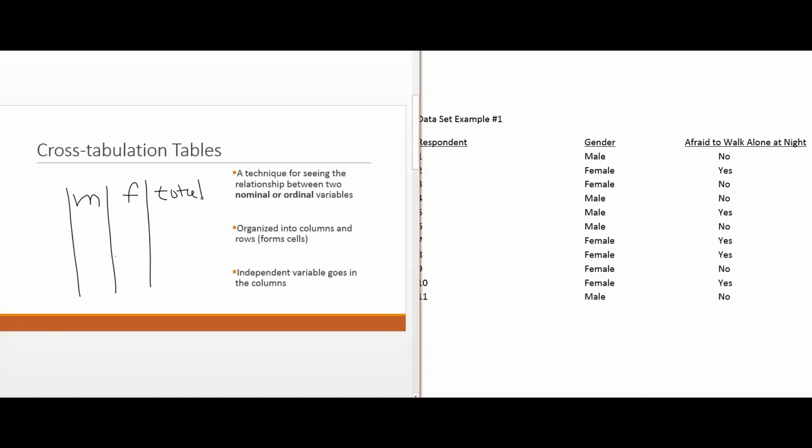Now I need to create rows for my dependent variable. The dependent variable is afraid to walk at night, and the values available to me are yes and no. I also need to create a total row.